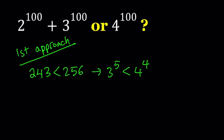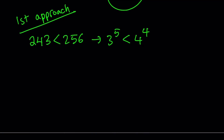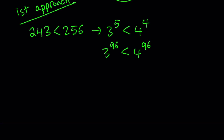Now my goal is to get to 4 to the power of 100. And for that, I do need 4 to the power of 96. So let's go ahead and compare 3 to the power of 96 with 4 to the power of 96. Since 3 is less than 4, we can raise both sides to the power of 96 and this inequality will be true. Now we have two inequalities and we can multiply them together, and that's going to give us 3 to the power of 101 is less than 4 to the power of 100.